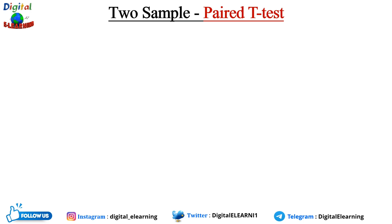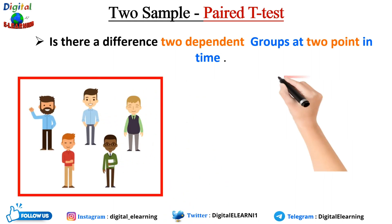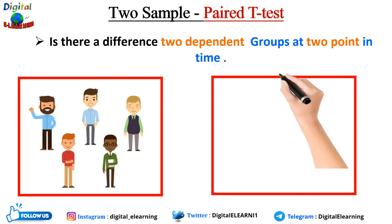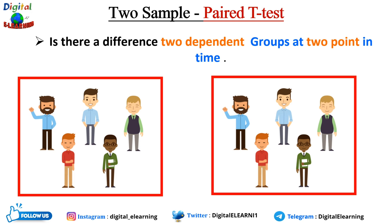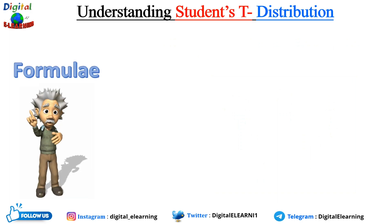The paired t-test is for two samples that are dependent. It asks whether there is a difference between two dependent groups at two different points in time. For example, the same set of samples measured in the morning and in the afternoon. This is how we compare the same samples at two different time points.